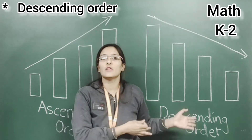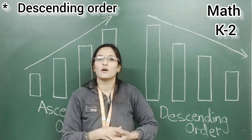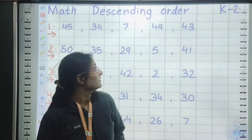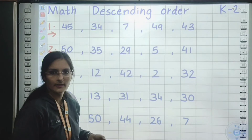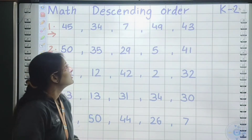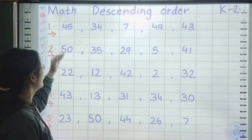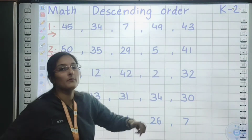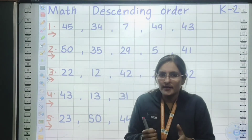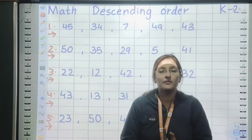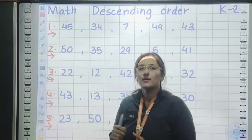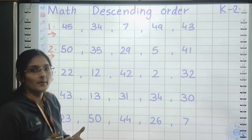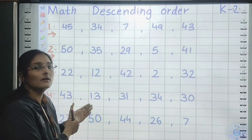Now we will apply the same on the given questions. I hope you got the proper meaning of descending order. We are going to arrange these numbers from biggest to smallest. We have to find out the biggest number in the given line and write that first.